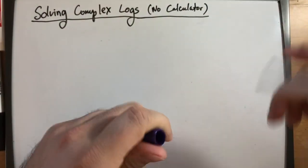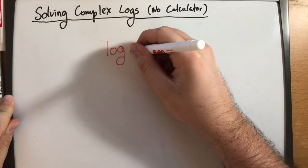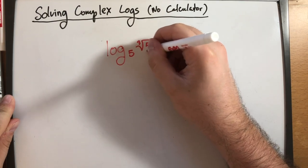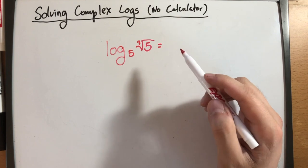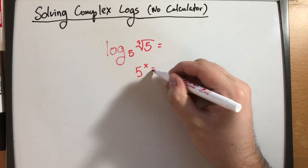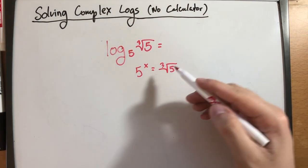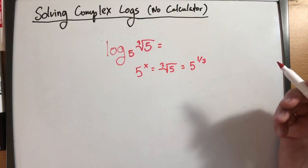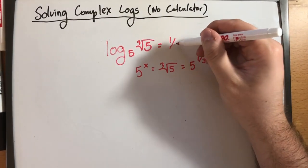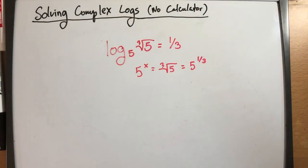Now we're going to move on to our last main type of logarithmic problem that may show up, which is when you have radicals. You are trying to solve for the exponent that I need to raise 5 to so that it is equal to the third root of 5. A radical or root is an exponent, so third root means 5 raised to the 1 third. Therefore, if 5 raised to x is equal to 5 raised to the 1 third, it has to be true that x is 1 third. The solution to the logarithm is 1 third.